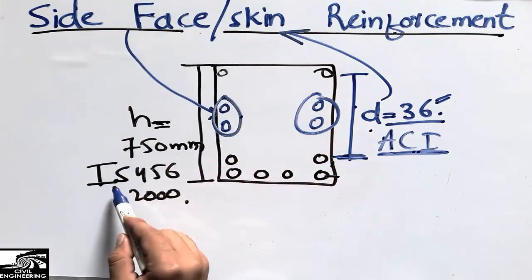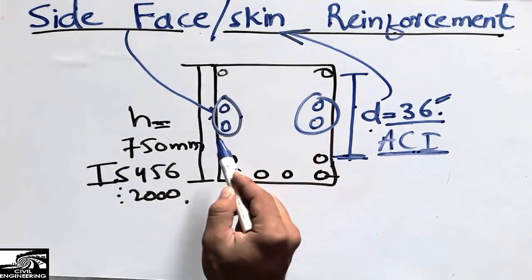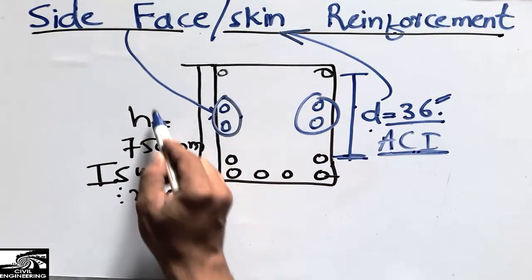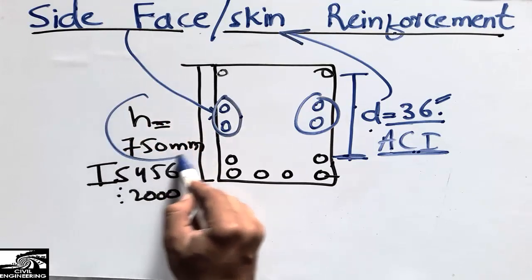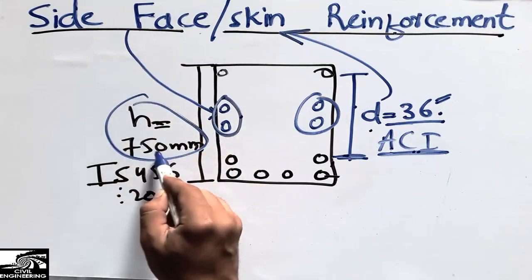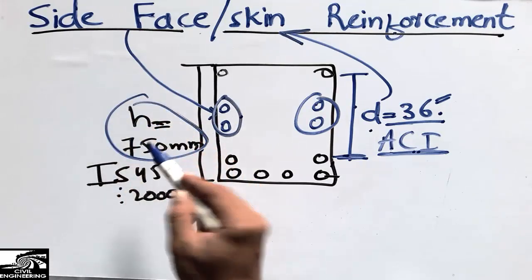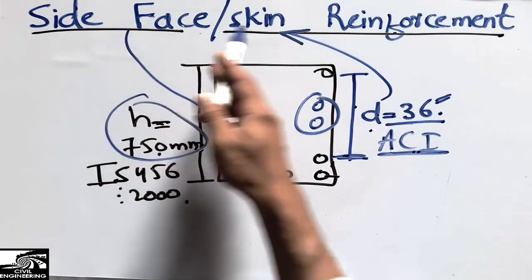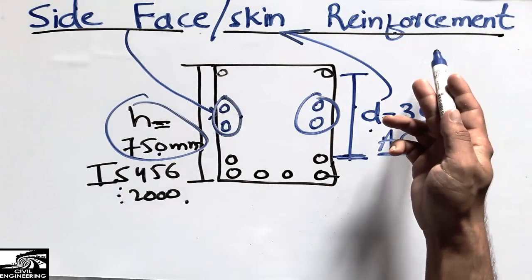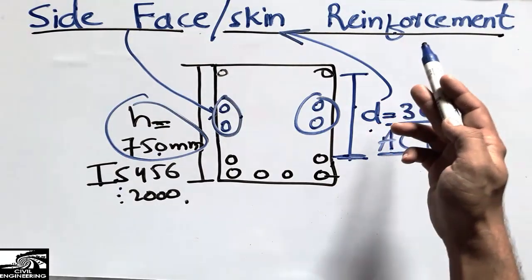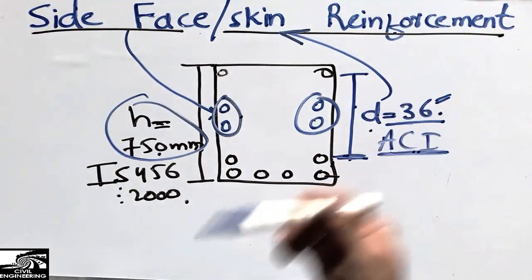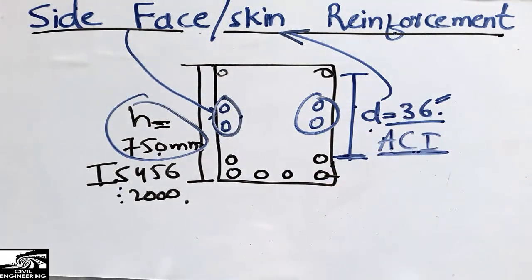In the case of Indian standards, when the total depth of the beam increases beyond 750 mm, we place the reinforcement we call the side face or skin reinforcement. Now I will explain why we use this type of reinforcement.